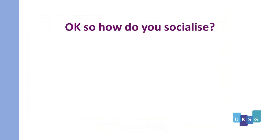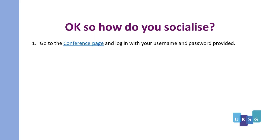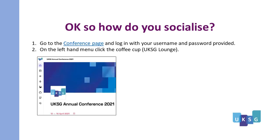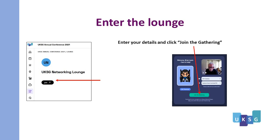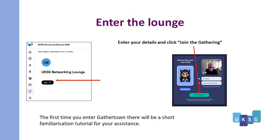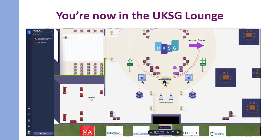So how do you socialize using GatherTown in an online system? Firstly, go to the conference page and log in with your username and password. On the left hand menu click the coffee cup — this is the UKSG lounge. To enter the lounge, click join, then enter your details and click join the gathering. The first time you enter GatherTown there will be a short familiarization tutorial for your assistance.